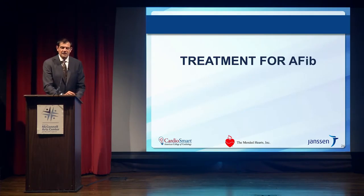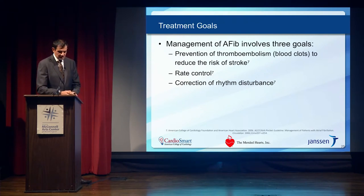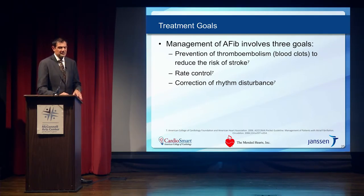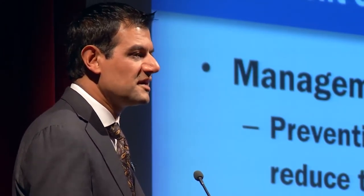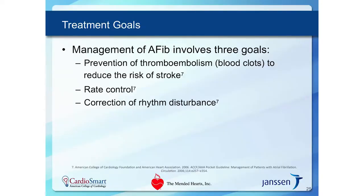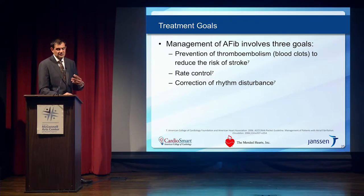When we treat atrial fib, it's a bit complicated because we're trying to treat the condition now and get the patient feeling better, while also preventing complications. The two biggest complications are heart failure and stroke. There are really three components of treating this condition: first, reducing the heart rate, since atrial fib can cause the heart to speed up dangerously fast. We can get the heart rate controlled either by pills or, in an emergency, through IV medication.